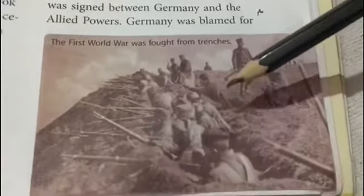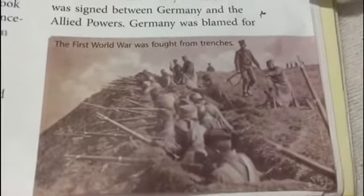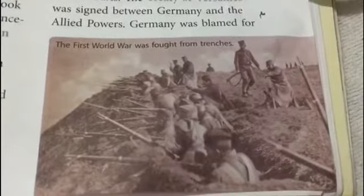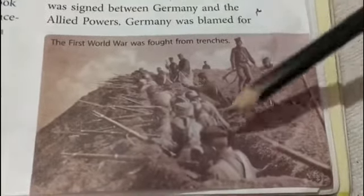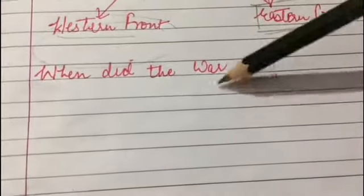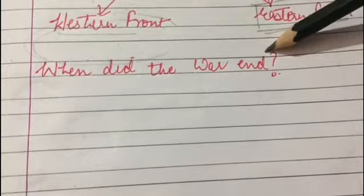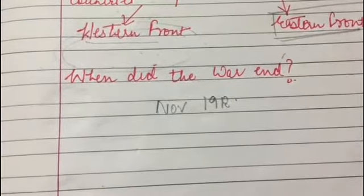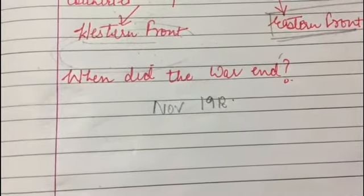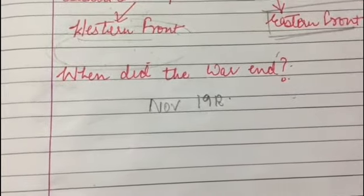India supported Britain in the hope that Britain would grant her self-government after the war, and Indian soldiers fought in Europe, Africa, and West Asia. The war ended in November 1918 when an agreement was signed between both sides to end the war.